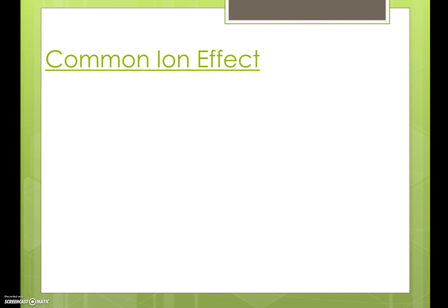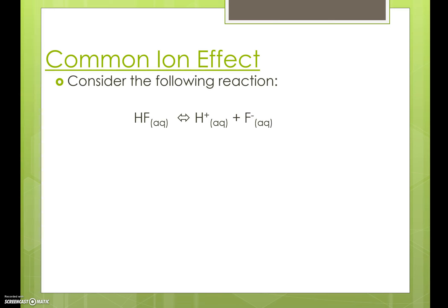Aqueous equilibrium. First we want to talk about what's called the common ion effect. Let's consider the following reaction: aqueous hydrofluoric acid producing hydrogen ions and fluoride ions. Initially in the solution we would just have hydrofluoric acid, but the reaction is going to proceed towards the right — partial dissociation is going to take place — and we're going to produce hydrogen ions and fluoride ions. Eventually that reaction will start to proceed towards the left and will reproduce some of that hydrofluoric acid that we had dissociated, and eventually will reach equilibrium.